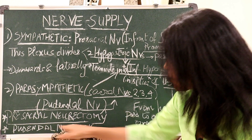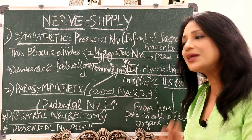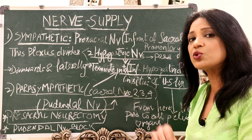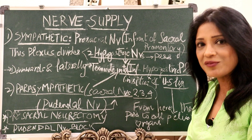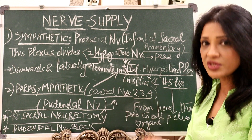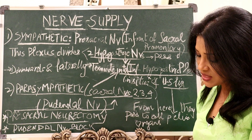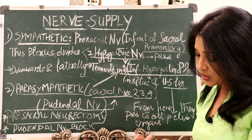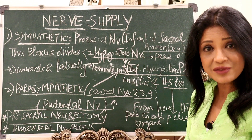Pre-sacral neurectomy or pudendal nerve block is performed when treating chronic pelvic pain. A pudendal block is needed in operative vaginal deliveries.